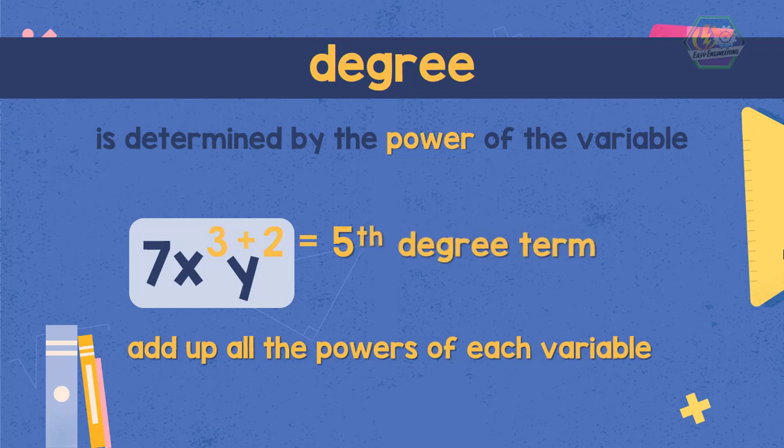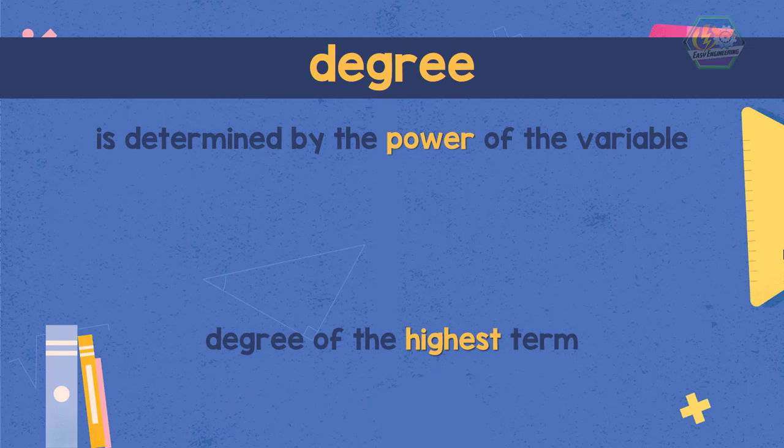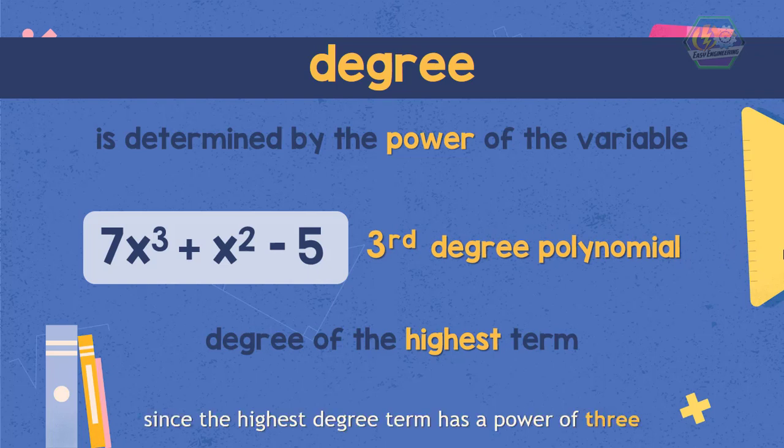And now, let's move to polynomials. In polynomials, we need to determine the degree of the highest term. If we have a polynomial 7x cubed plus x squared minus 5, then this polynomial is a third degree polynomial, since the highest degree term has a power of 3.